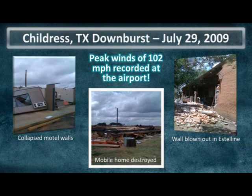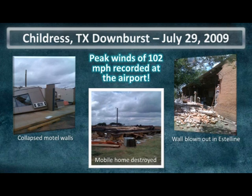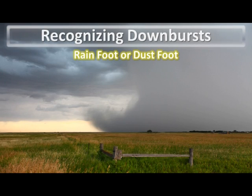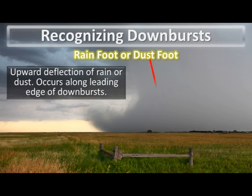Here's the aftermath of a downburst that struck the Estelline and Childress areas back in the summer of 2009. The peak wind gust at the Childress Airport was actually clocked at 102 miles per hour during this downburst. Some residents believed this was a tornado given the extent of damage, but as was later shown during a storm survey the following day, the damage featured debris being blown outwards over a wide path, which is a hallmark of downbursts. Damage from tornadoes, on the other hand, tends to have debris concentrated inward near the path of the tornado.